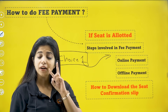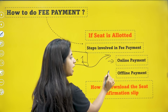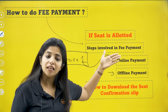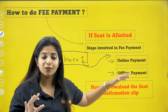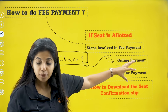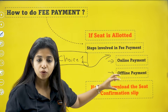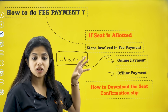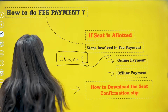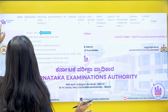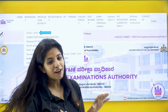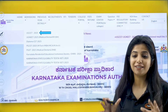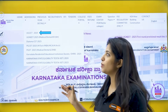The fee payment can be done in two ways: one is online payment and the other is offline payment. I will be talking about them separately so you have a better understanding, and post that you will be allowed to download your seat confirmation slip. Do not forget to subscribe to the channel and click on the like button if you think this video is helpful.